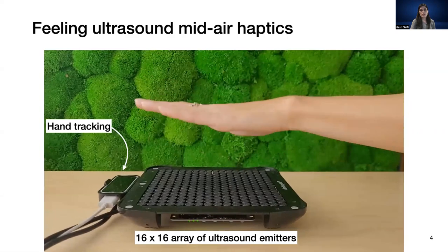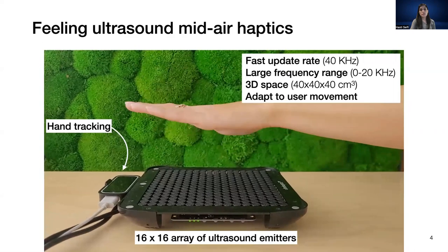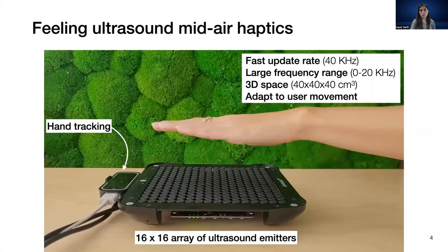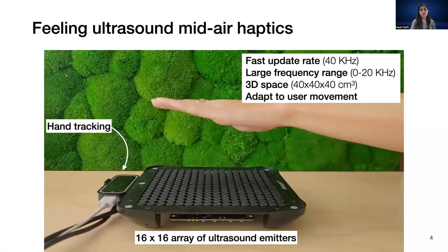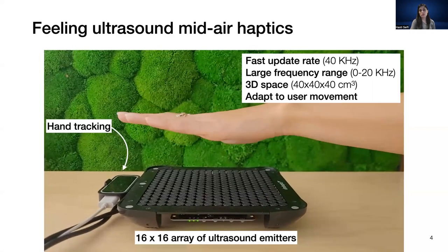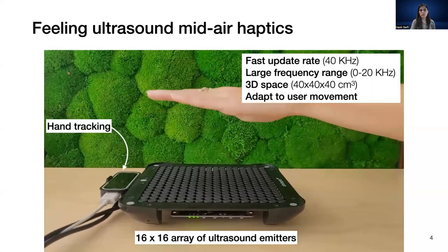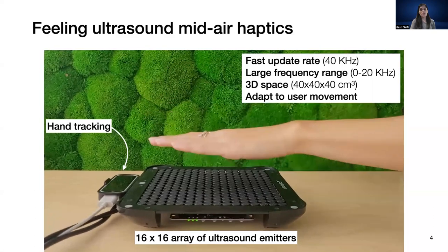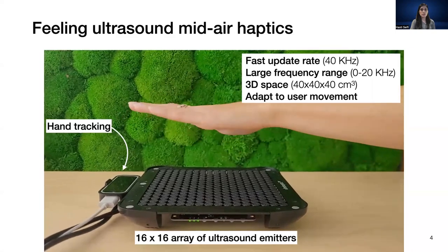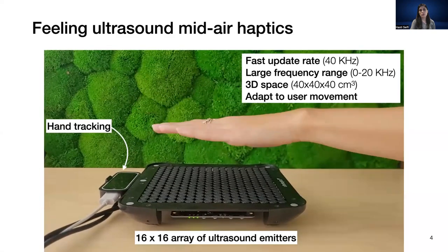This technology has a larger design space than vibrotactile technology because of the fast update rate. Designers can quickly move the focal point so that the pattern feels like a static shape on your hand, or they can move it slowly so that it feels like a moving point. The frequency range for this technology is also much larger than vibrotactile actuators. You can move the focal point in a 3D space, and you can also adapt the haptic pattern to the user's movement so that the pattern follows the user's hand, or keep the pattern at a fixed position above the device.